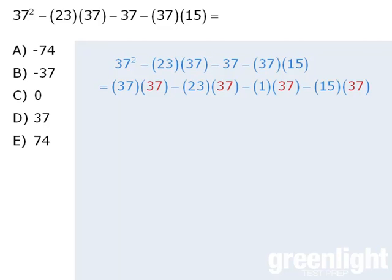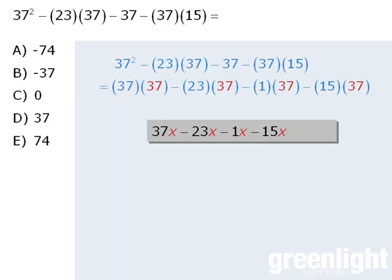When we do this, we can see that all four terms here are like terms, in that they all include multiples of 37. In fact, this expression involving 37s is very similar to this expression involving xs.